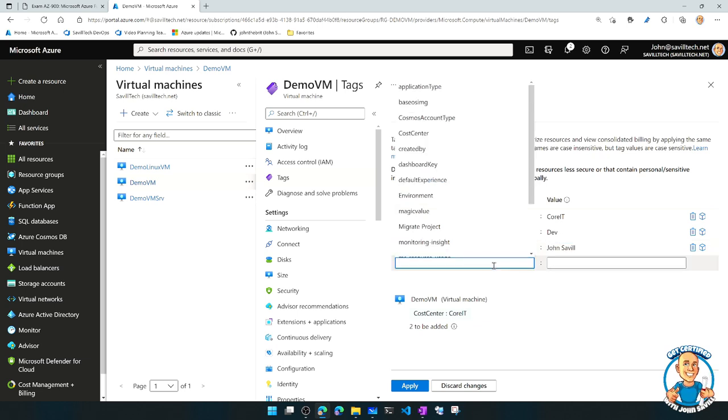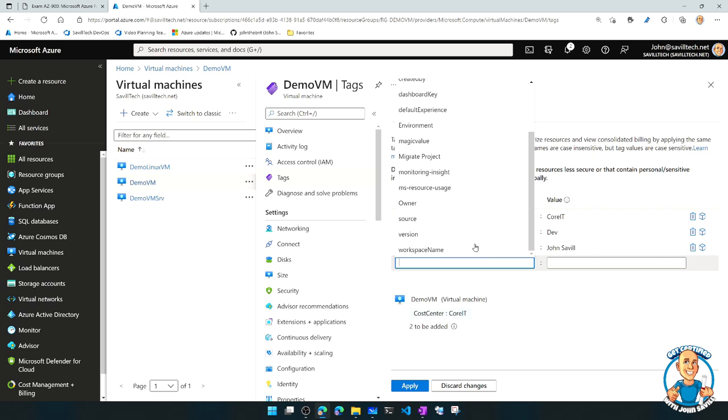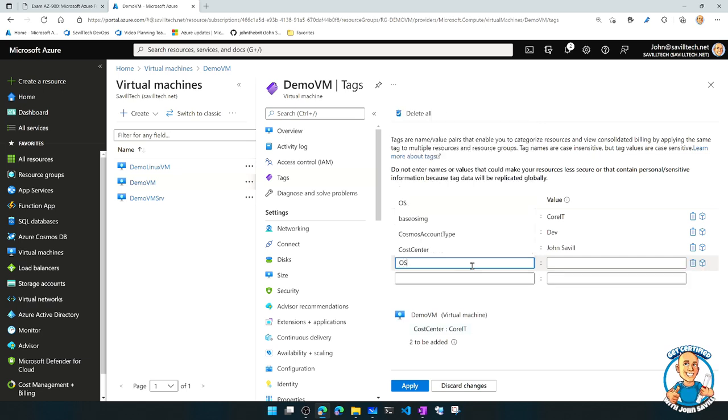And I can go through and create these things that might matter to me based on what I think is useful things I might as an organization want to search on because I can search on these tags. Remember, I can also do billing based on these tags. I might have, for example, OS. So maybe I'll put in here, Windows 11. So I can create all these tags and then apply.